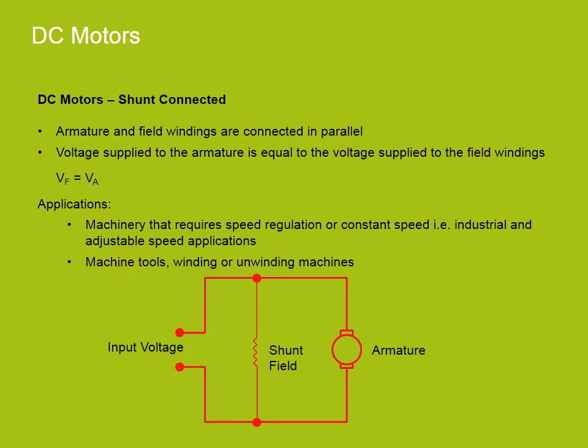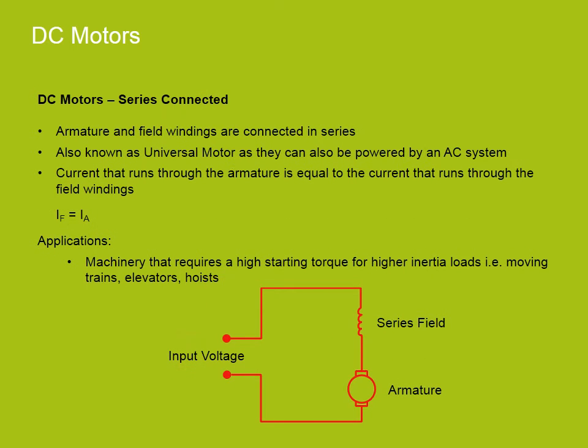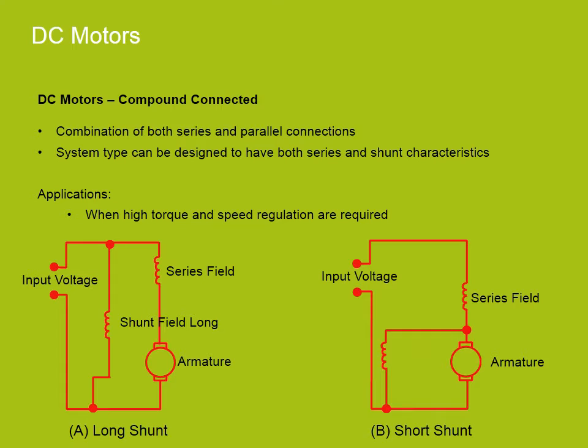In a shunt-connected DC motor, the armature and the field windings are connected in parallel. Voltage supplied to the armature is equal to the voltage supplied to the field windings. Their main application is in machinery that requires speed regulation or constant speed, for example industrial and adjustable speed applications such as machine tools and winding or unwinding machines. In series-connected DC motors, the armature and field windings are connected in series. Series-connected motors are also known as universal motors as they can be powered by an AC power supply system. The current that runs through the armature is equal to the current that runs through the field windings. Their applications include machinery that requires high starting torque or higher inertia loads such as moving trains, elevators and hoists. Compound DC motors are a combination of both series and parallel connections. These systems can be designed to have both series and shunt characteristics. Their applications are usually when both high torque and speed regulation are required.